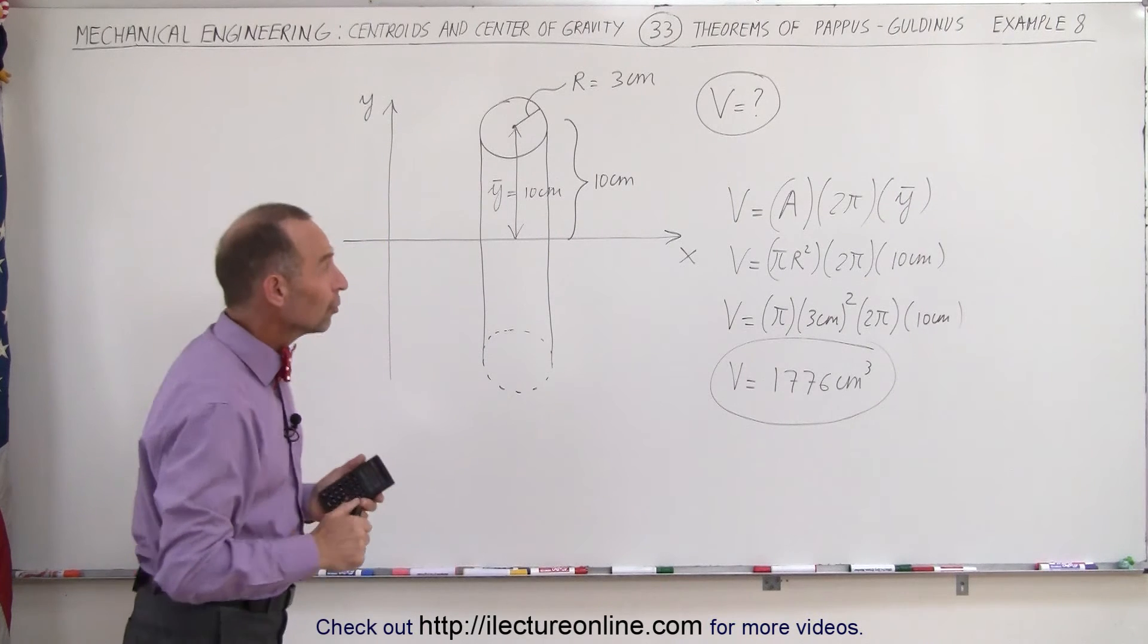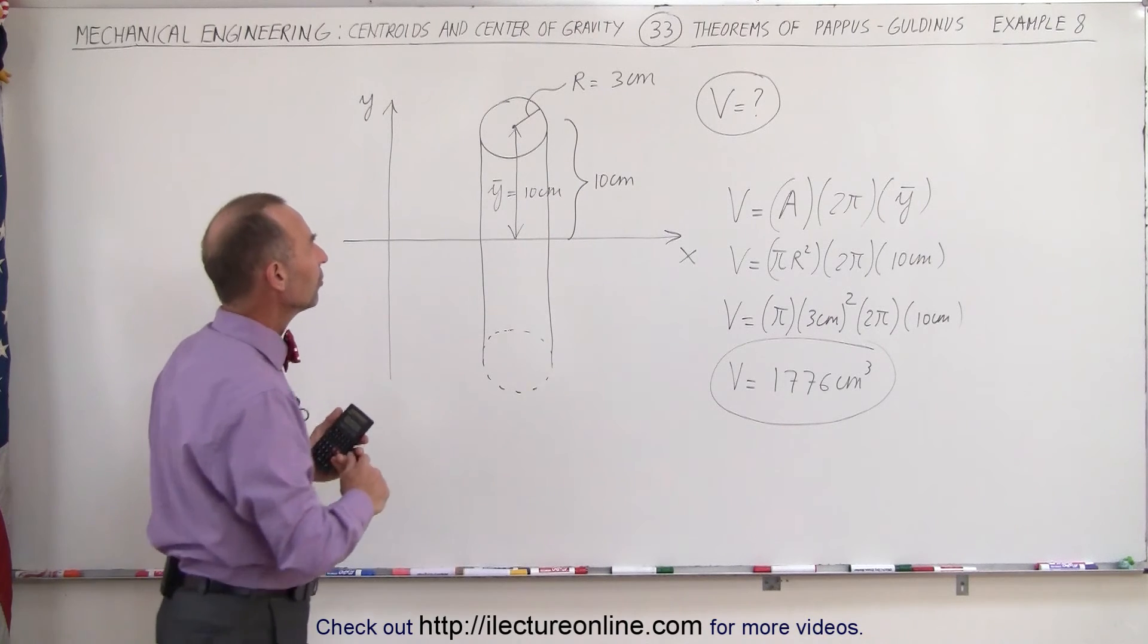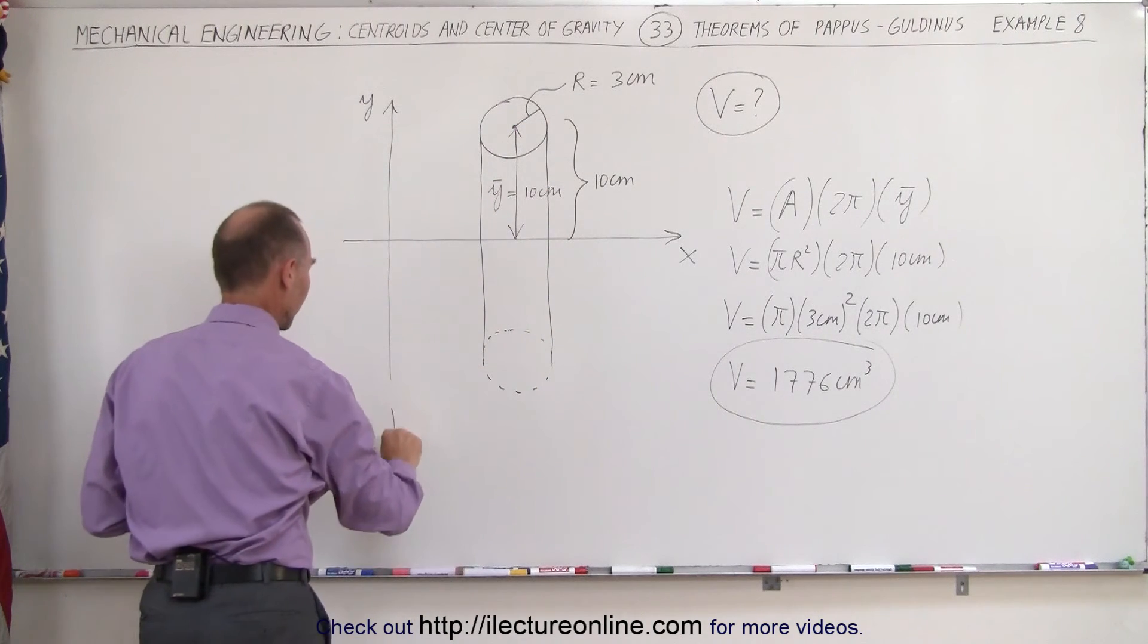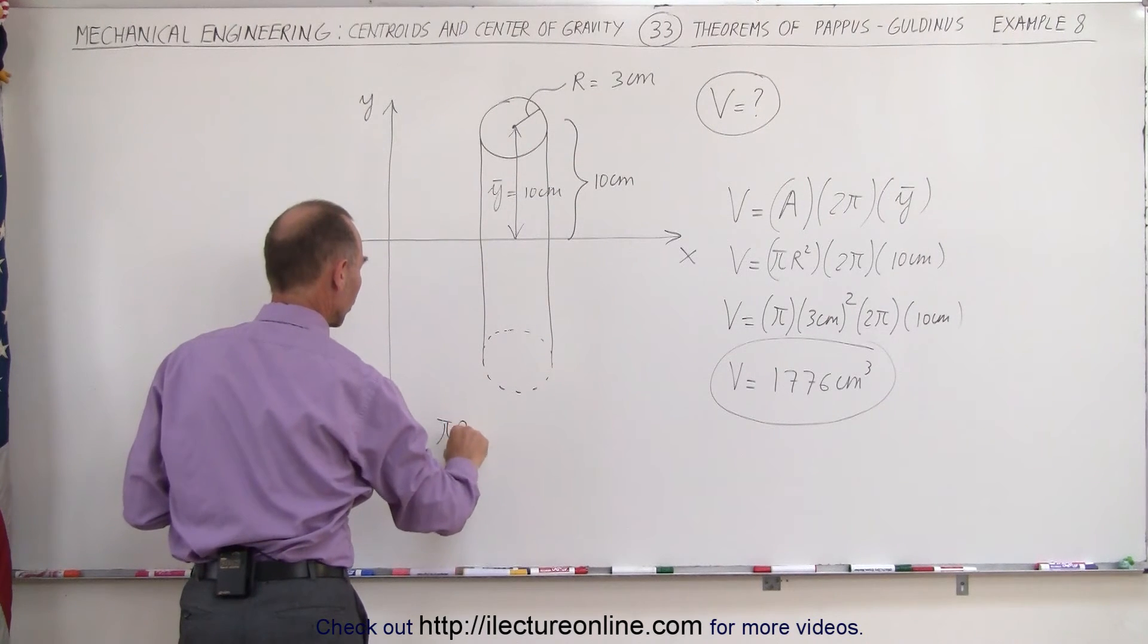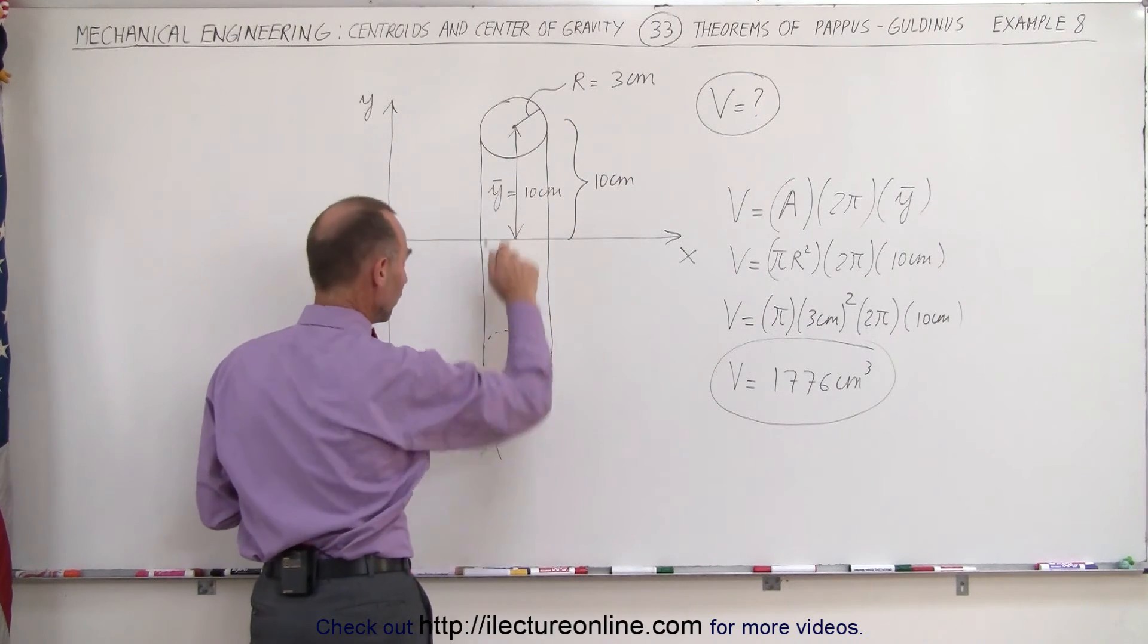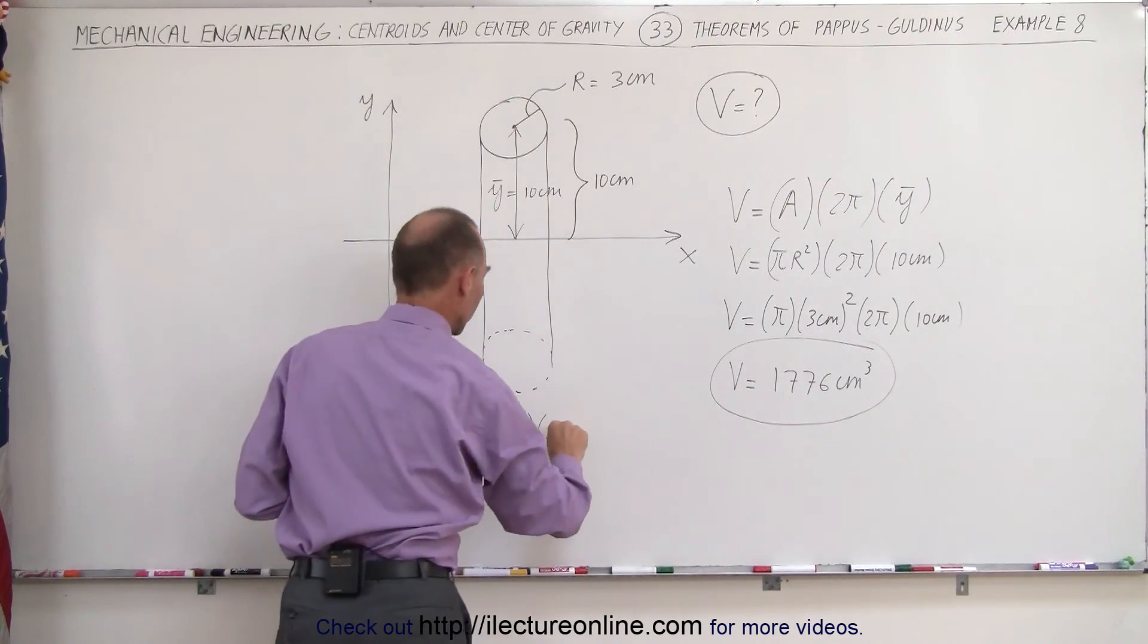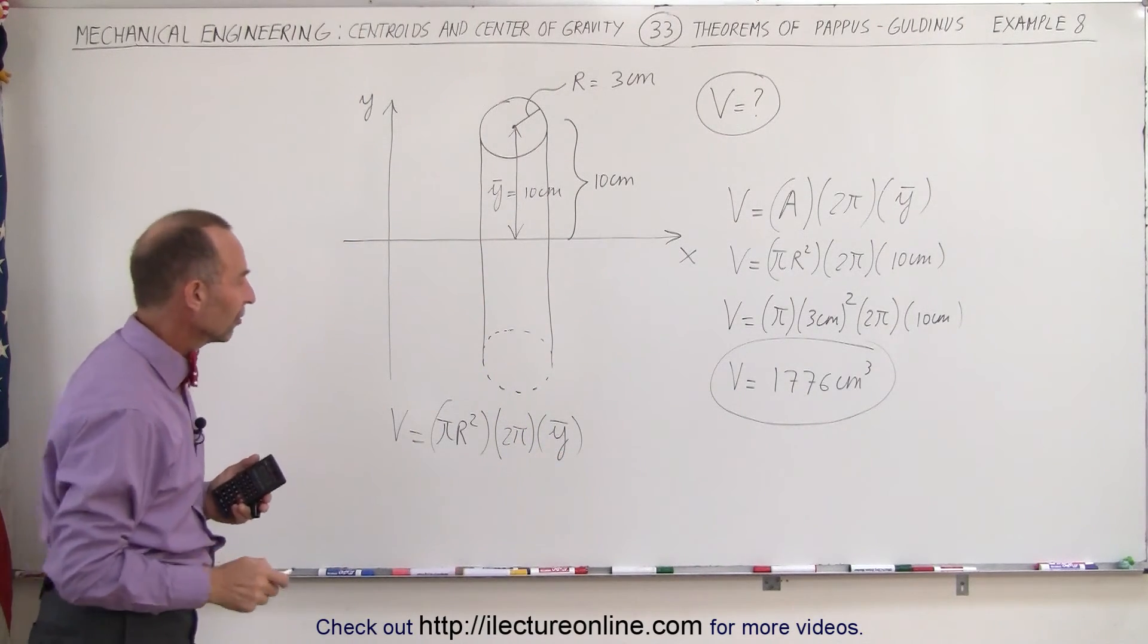Let's do this now without using any kind of numbers, just straight symbols. Let's call this the radius of the path that the centroid takes. So we can write volume is equal to the area πr squared, r would be the radius of the circle, times 2π times the distance from the axis to the centroid, call it y with a line over it. That means the y coordinate of the centroid.